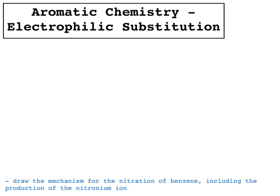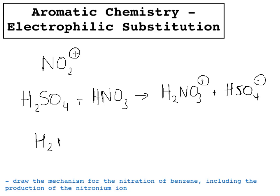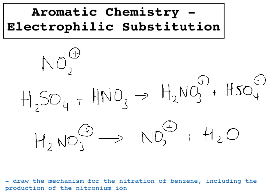The nitration of benzene requires the NO2+ ion, called the nitronium ion. That is created via the reaction of concentrated sulfuric acid and concentrated nitric acid, which creates H2NO3+ plus HSO4−. The H2NO3+ ion then breaks down into NO2+ plus water. So there is our NO2+ created via this reaction.